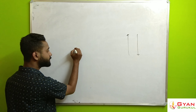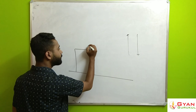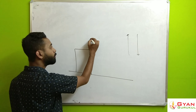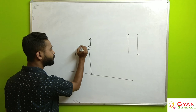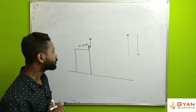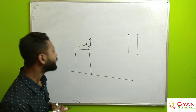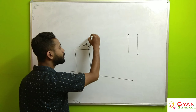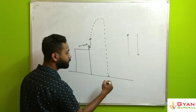Suppose we consider this condition: a particular person is throwing a ball vertically upward. He is throwing the ball vertically upward with a velocity of 3 meters per second. The ball will first go up to a highest point, then turn back and hit the ground.